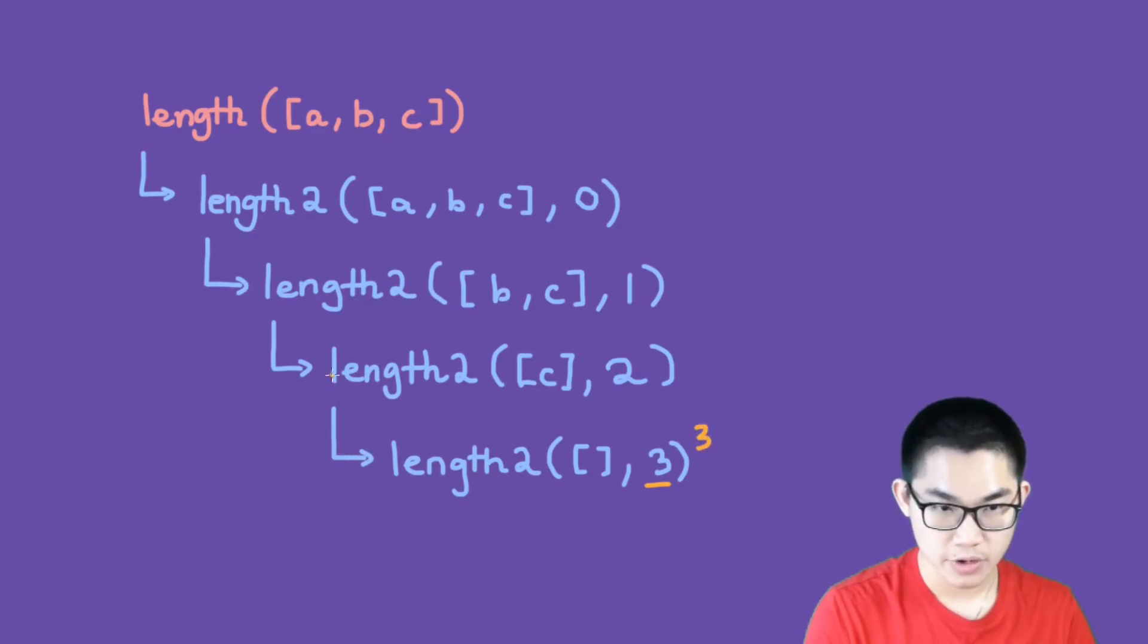And then going up the recursion tree, this will return 3. Going up the recursion tree, this will return 3. And going up, this one will be 3. And finally, the very top one will be 3.